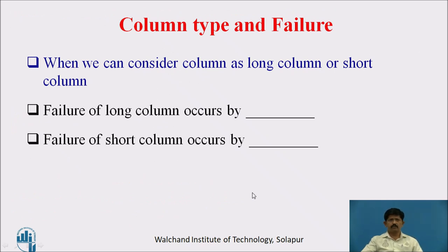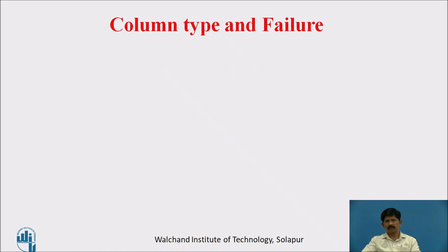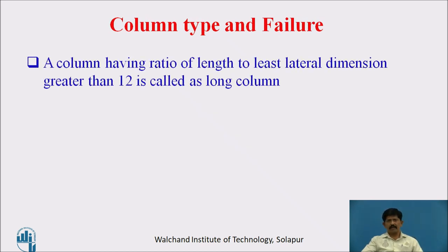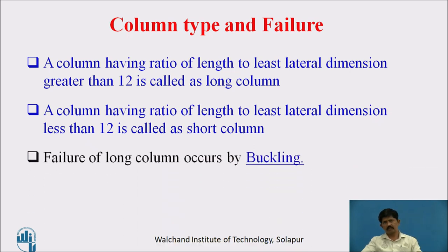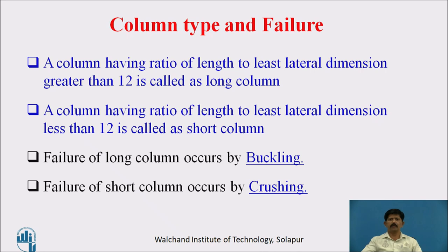Column type and failure: A column having the ratio of length to least lateral dimension greater than 12 is called a long column. A column having that ratio less than 12 is called a short column. Failure of a long column occurs by buckling, whereas failure of a short column occurs by crushing.